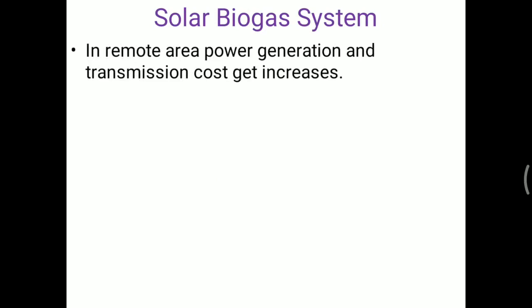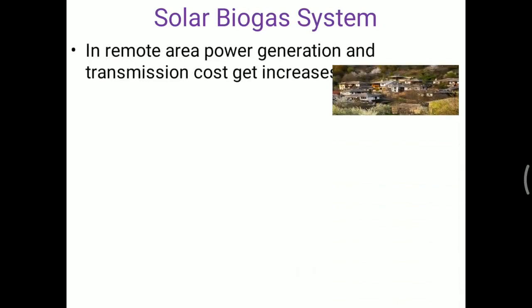The next type is the solar-biogas system. This system can be installed in remote areas where the population density is low, the power generation and transmission cost is high. In this situation, two energy systems are used together — one is solar and the second is biogas. For a biogas energy system, the raw material is available in remote areas.